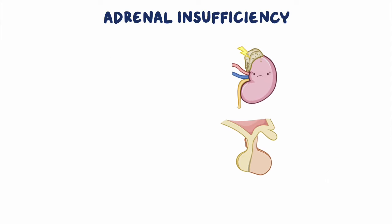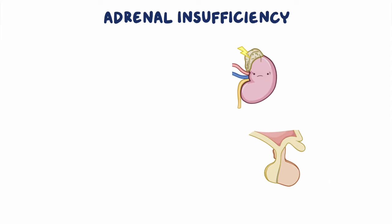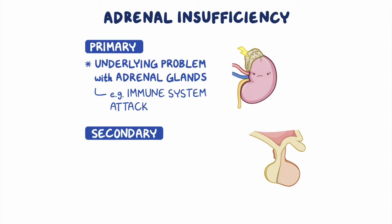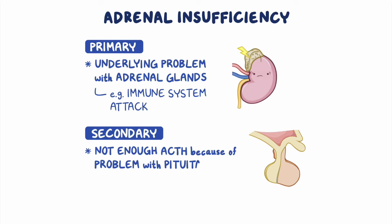Adrenal insufficiency can be primary or secondary. In primary adrenal insufficiency, there is plenty of ACTH to stimulate the adrenal glands, but there's an underlying problem with the adrenal glands themselves, like when the immune system attacks them. In secondary adrenal insufficiency, there isn't enough ACTH to stimulate the adrenal glands because of a problem with the pituitary gland, like a tumor.